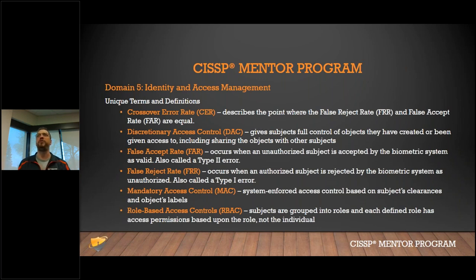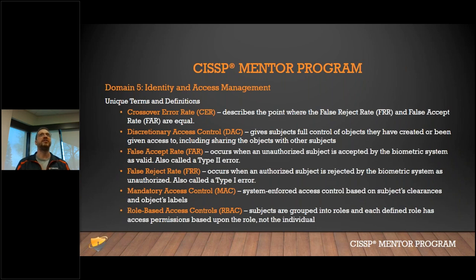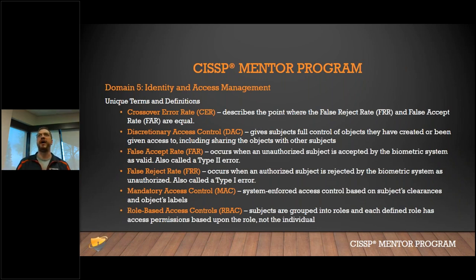A false accept is when David isn't supposed to have access but gets in through biometrics — that's Type 2. A false reject is when Joe is allowed access but gets rejected because the reading isn't accurate — that's Type 1.